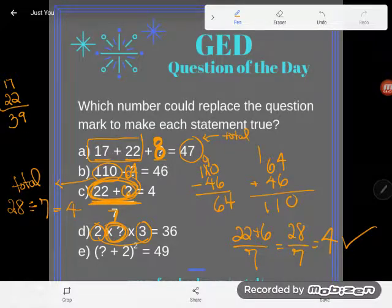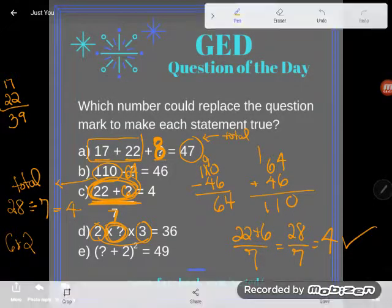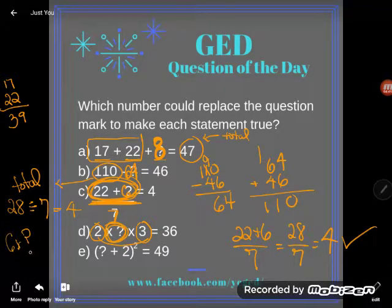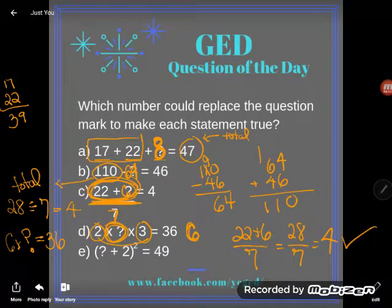There's my 6 times some number. 6 times some number is equal to 36. Well, 6 times what number is equal to 36? Sorry, I meant to write a question mark and I wrote a 2. 6 times what number is equal to 36? Of course, that's 6 times 6. So the answer here would be 6.